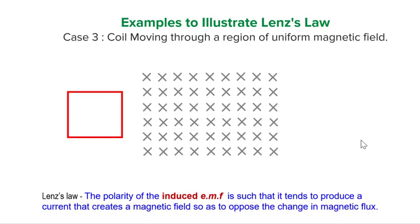Let's try one more example of a coil moving through a region of uniform magnetic field. We can break the motion up into three parts: Number one, when the coil is going to enter into the field; Number two, when it is moving inside the field; and Number three, when it is moving out of the field.